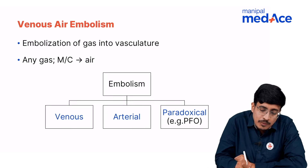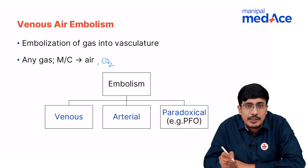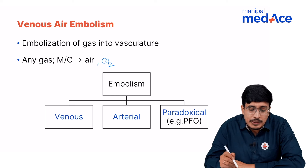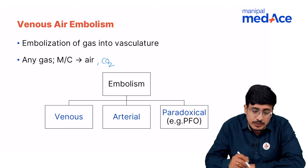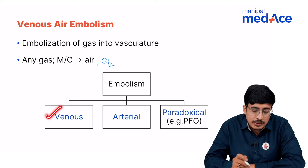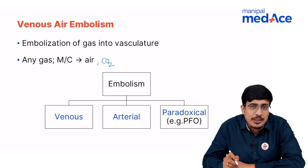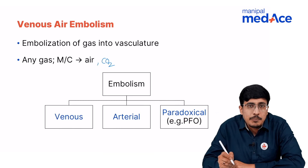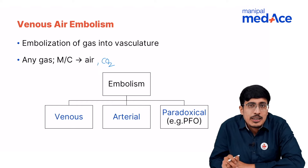Carbon dioxide can also enter the vasculature following laparoscopic surgeries. This embolism can be venous if the gas enters the veins, arterial if it enters the arteries, or paradoxical. Paradoxical embolization is due to the presence of a patent foramen ovale or any such shunt that can initiate an embolic phenomenon.